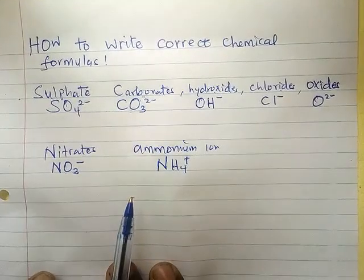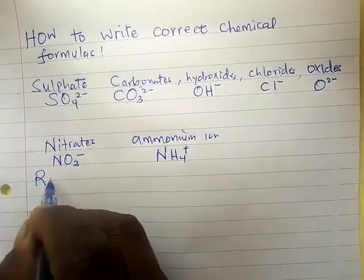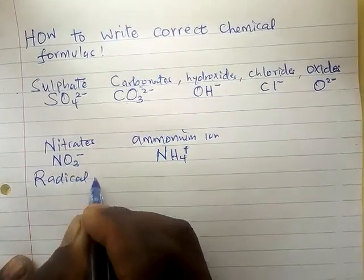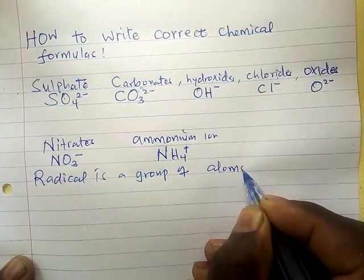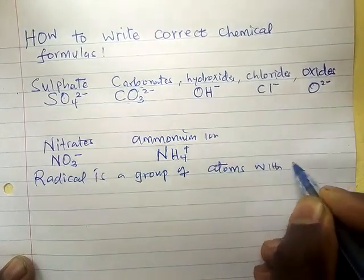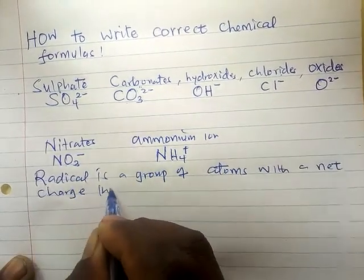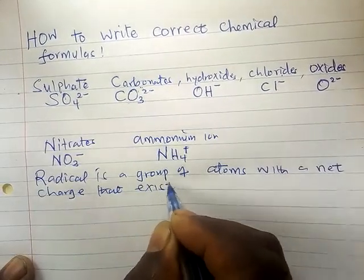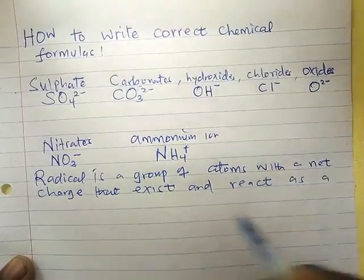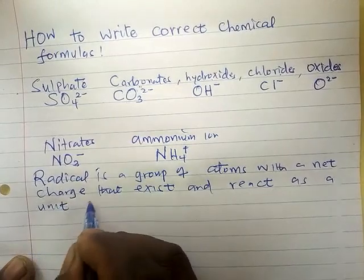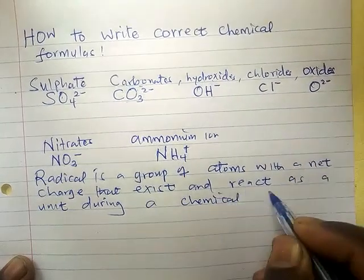Most of these are called radicals, and you should know the definition of what a radical is. A radical is a group of atoms with a net charge that exists and reacts as a unit during a chemical reaction.